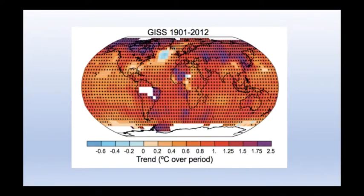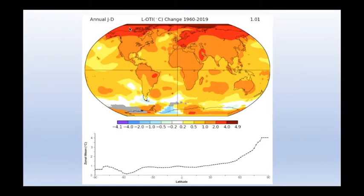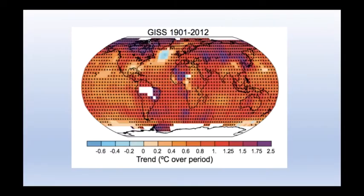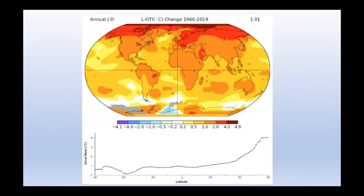The only place where the trend may not be significant is where you see light blue up in the North Atlantic. But in most places over the world, and especially in the Arctic, the planet is warming — and the Arctic is warming a lot faster. If you look at just the 1960 to 2019 record, the Arctic is warming almost four to five times as fast. In the previous graph the scale goes up to about two and a half degrees, but looking at just the last 50 years the Arctic has warmed almost five times as fast.